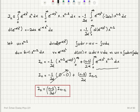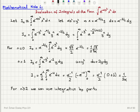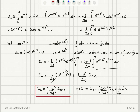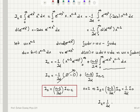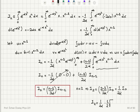For example, for n equal to 2: I sub 2 equals 2 minus 1 over 2 alpha times I₀, which is 1 over 2 alpha times I₀. And I₀ we found to be 1/2 times square root of pi over alpha. So I₂ equals 1 over 2 alpha multiplied by 1/2 square root pi over alpha, which gives square root pi over 4 times alpha to the power minus 3/2.